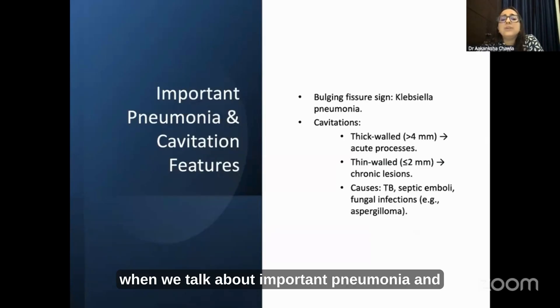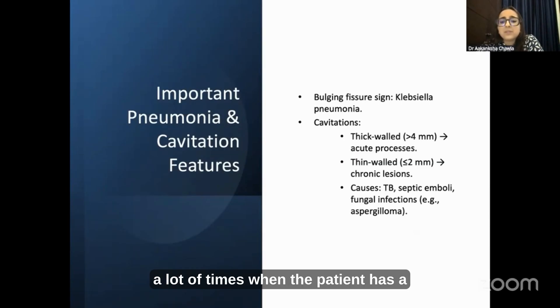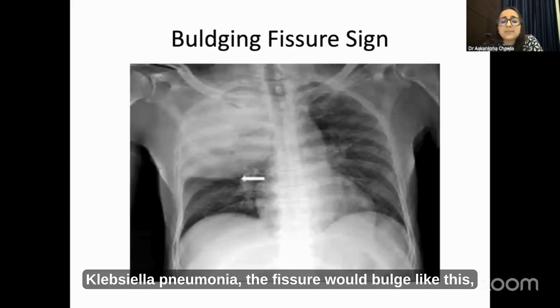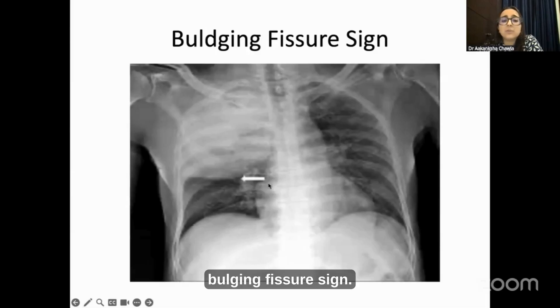When we talk about important pneumonia and cavitation features, a lot of times when the patient has Klebsiella pneumonia, the fissure would bulge — which is very typical for Klebsiella pneumonia and is called the bulging fissure sign.